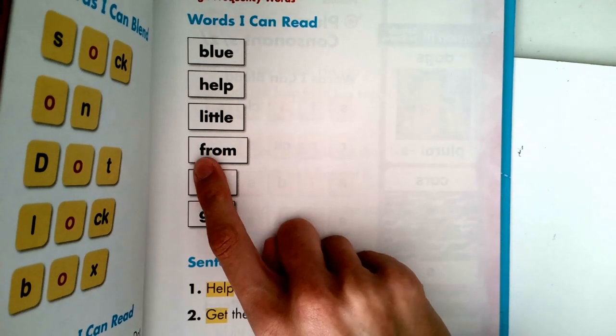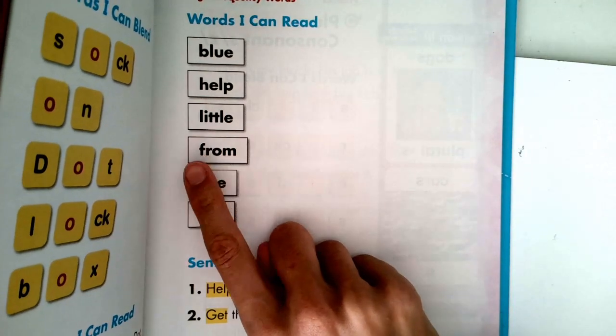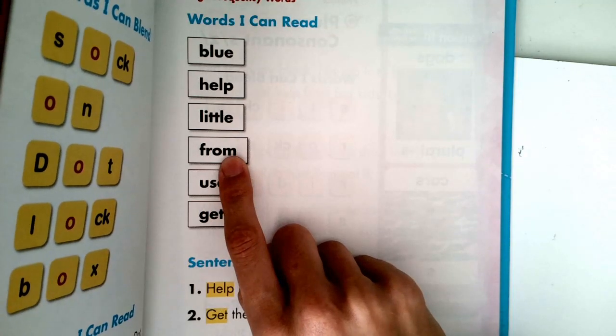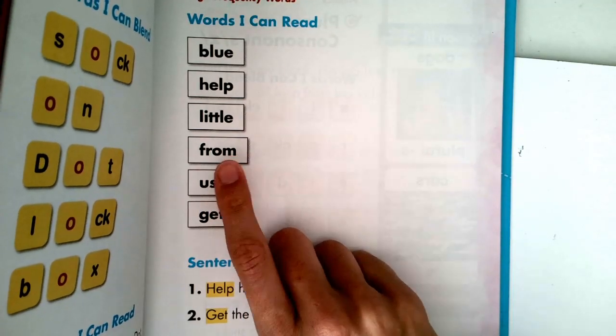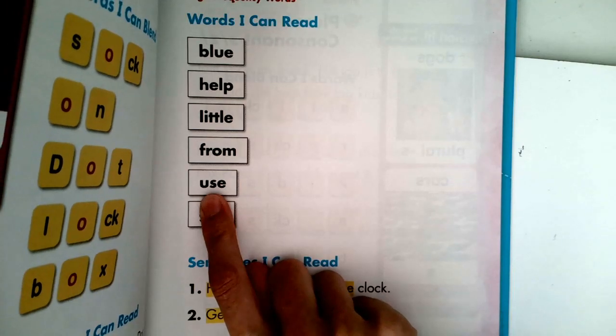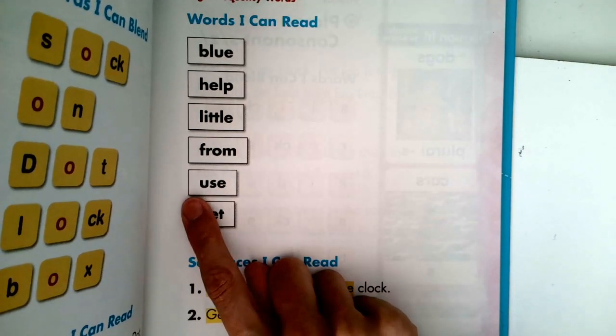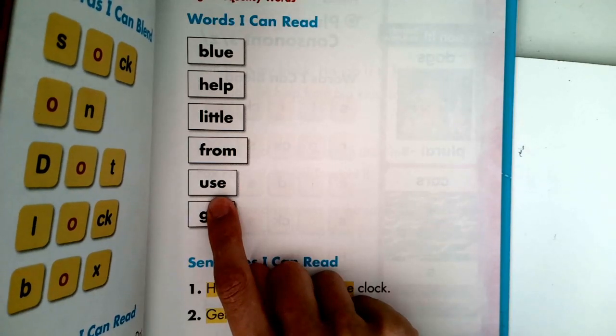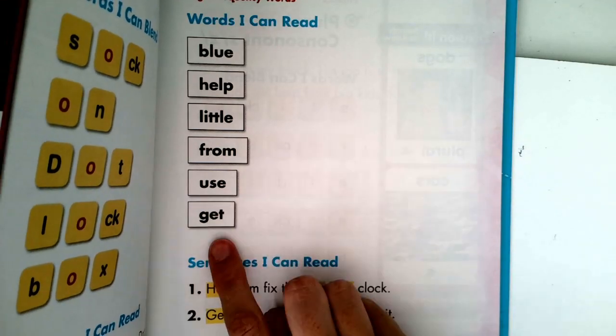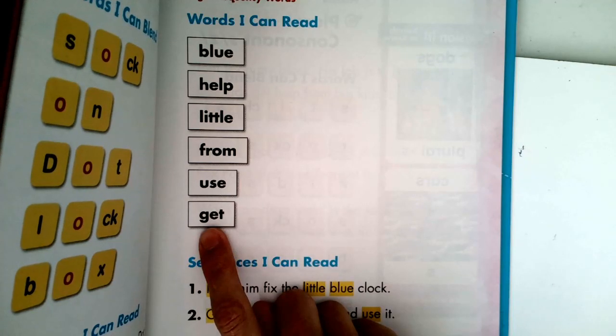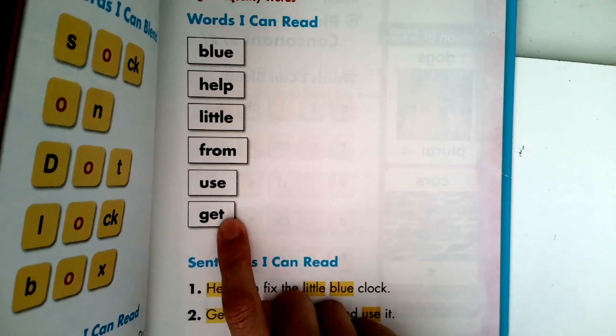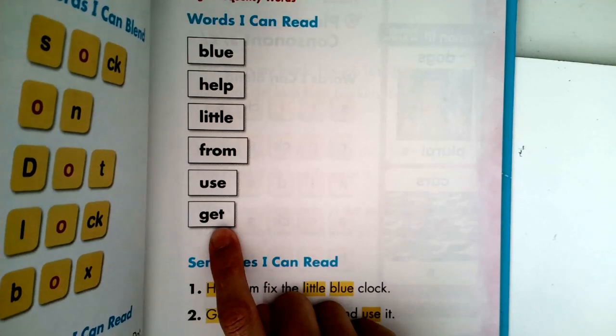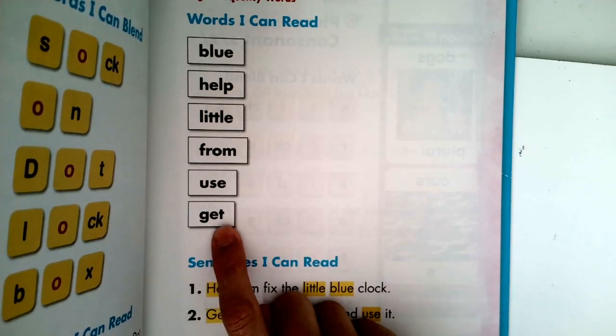The next word is from. Can you point to the word and say it? From. I come from the town of South Haven. This next one is use. Can you say this word? Use. Good. I like to use a pencil when I'm doing my work. And the last word. Can you sound it out? Get. Nice job. Get is this word. I like to get pepperoni pizza from Little Caesars.